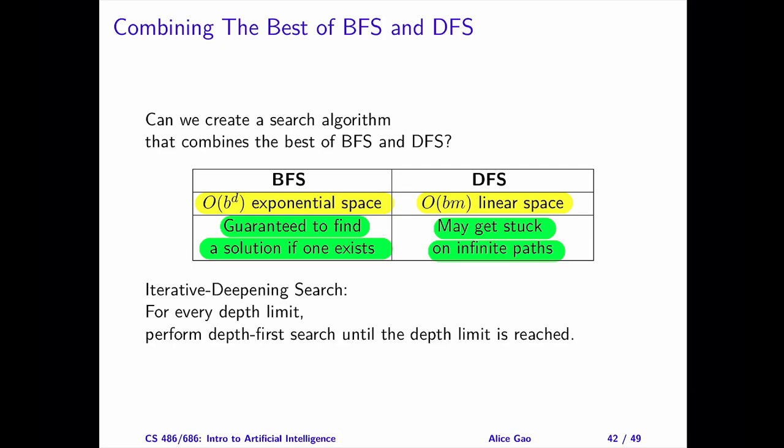IDS starts with a depth limit of 0 and increments it as long as it hasn't found the goal node. For every depth limit, IDS performs DFS up to the depth limit. This means that if the current node is at the depth limit, IDS will not generate and add its successors to the frontier. Essentially, IDS backtracks when it reaches the depth limit. Every time we increase the depth limit, IDS starts the depth-first search all over again.